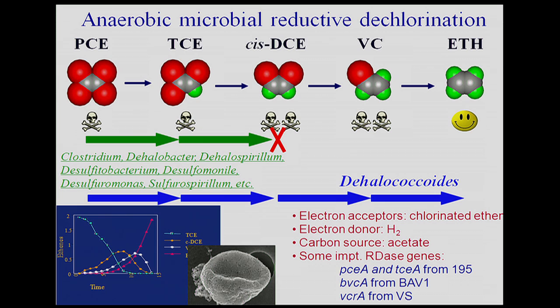Shown here is one of the potential remediation options for degrading these compounds. As you can see with those molecular models, PCE can be degraded to TCE — trichloroethylene — where we take a chlorine off with each subsequent step. We then get to cis-DCE, vinyl chloride, and ethene. The first four compounds, each with a chlorine on them, are quite toxic, especially vinyl chloride — a known human carcinogen. However, if we can remove the last chlorine and make it all the way to ethene, we have a non-toxic material.